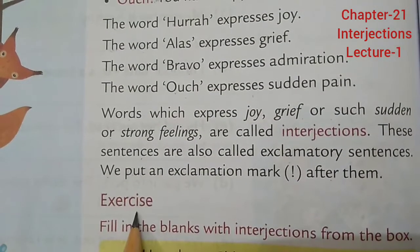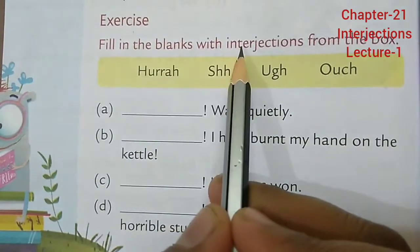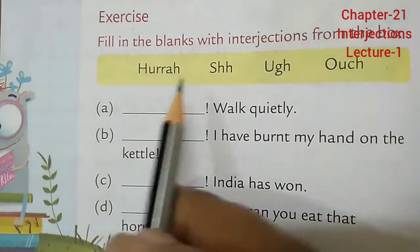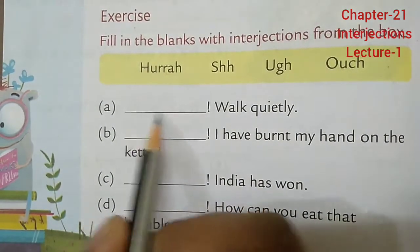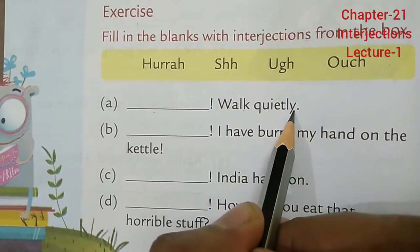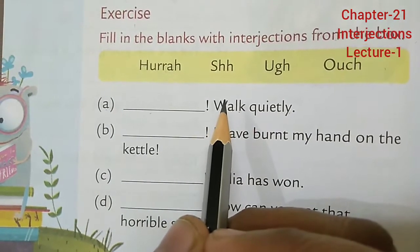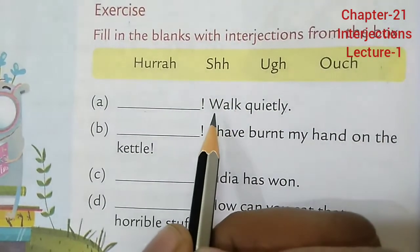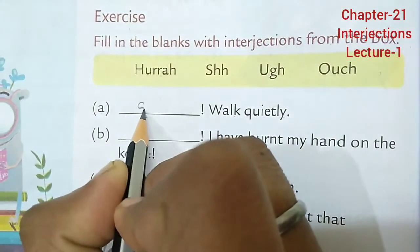Now let's solve the exercise. Fill in the blanks with an interjection from the box — you already have the box. You have to use the given interjections to complete the sentences. Let's start: (a) Blank — walk quietly. So when someone is asking for silence in class, we say 'shh.' Walk quietly.